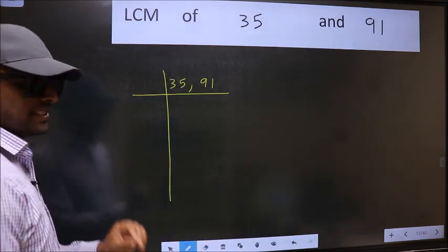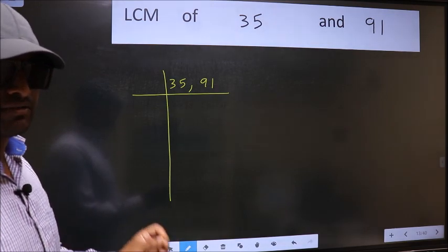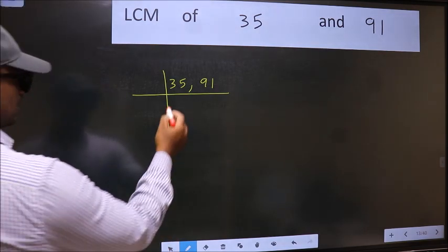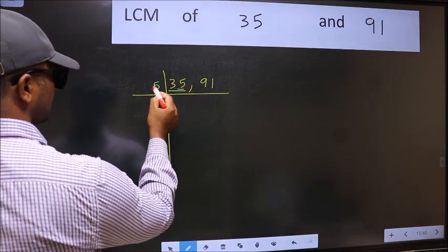This is step 1. Now you should focus on the first number, which is 35 here. Last digit is 5, so take 5.